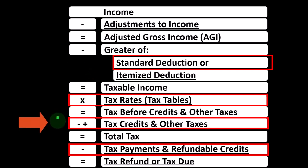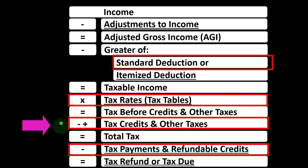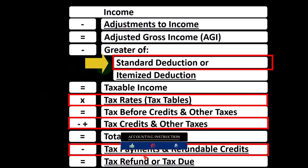When thinking about dependents, the primary line items are generally the credits. If we have a single taxpayer with a dependent, they might get a child tax credit — which could have a refundable portion — or other dependent credits. There could also be changes to filing status; for example, going from single to head of household, which could affect the standard deduction as well as tax rates.